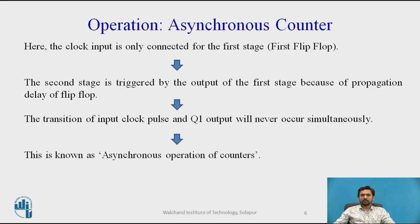In the operation of an asynchronous counter, the clock input is only connected to the first stage, that is, the first flip-flop. The clock is applied to the clock input of only the first flip-flop, which is always the least significant bit. The second stage is triggered by the output of the first stage because of the propagation delay of the flip-flop. A transition of the input clock pulse and a transition of the output of the first flip-flop can never occur at exactly the same time. Therefore, the two flip-flops are never simultaneously triggered, and the counter operation is asynchronous.